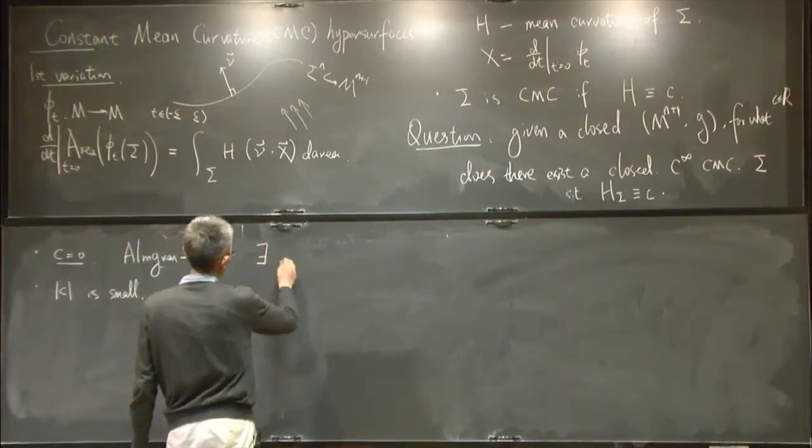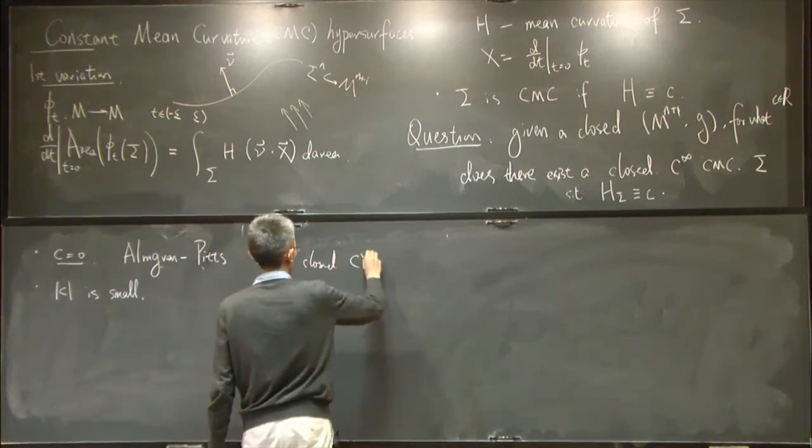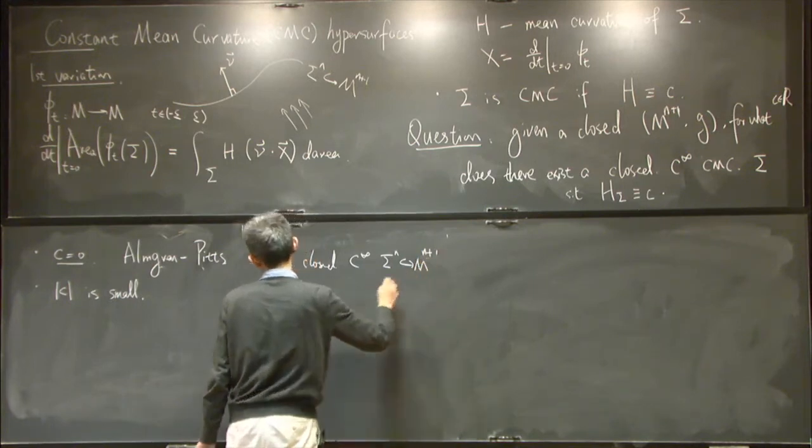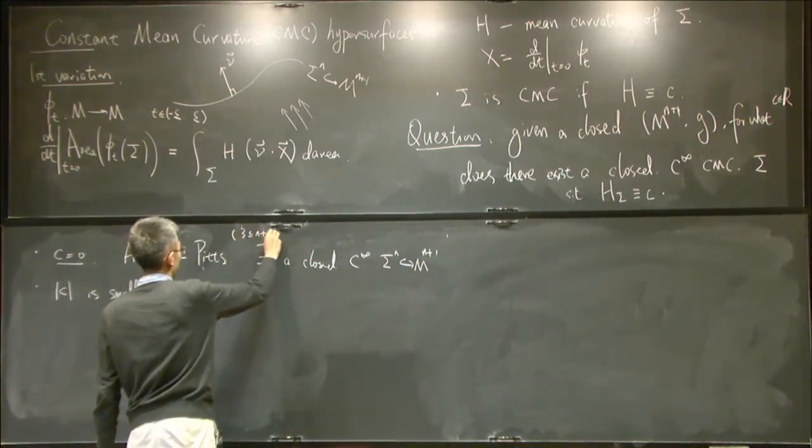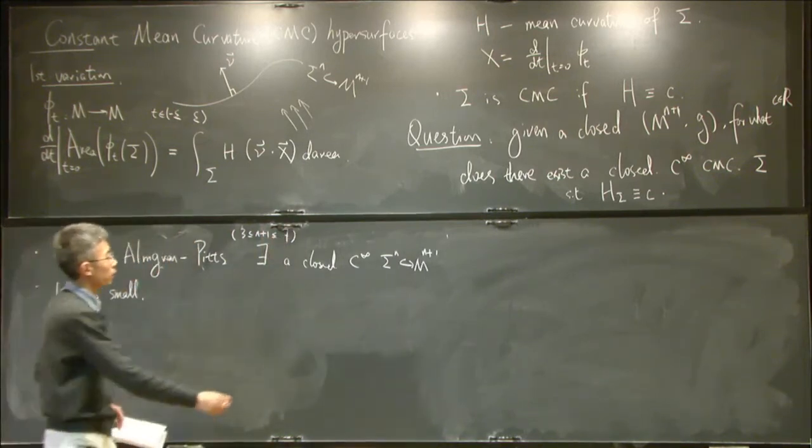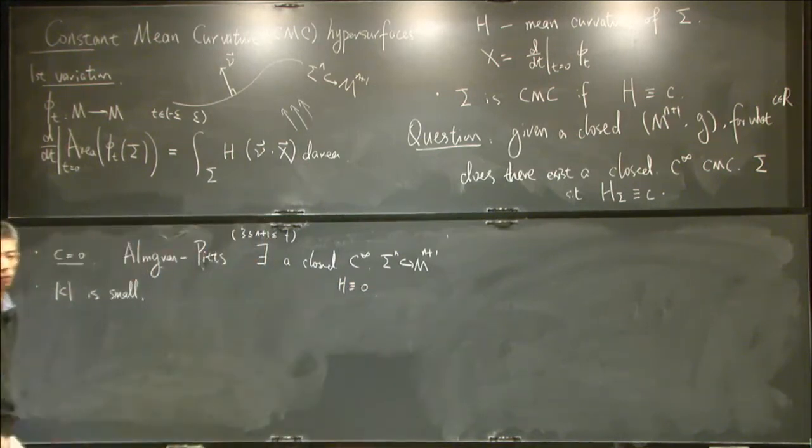So there always exists a closed, smooth hypersurface. The dimension restriction is that we live from dimension 3 to 7, and in higher dimensions we allow singularities. So this guy has a vanishing mean curvature, we also call it a minimal hypersurface.